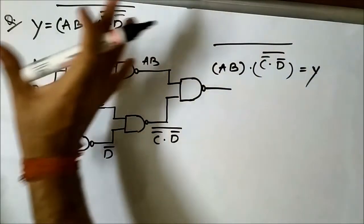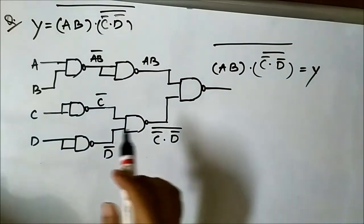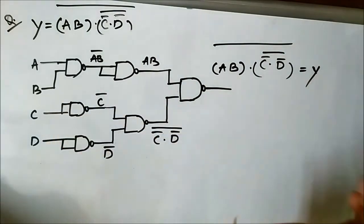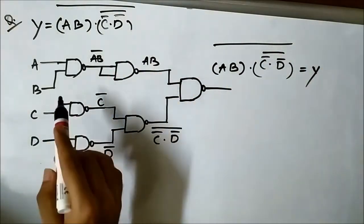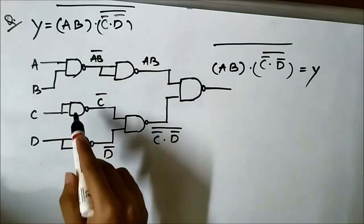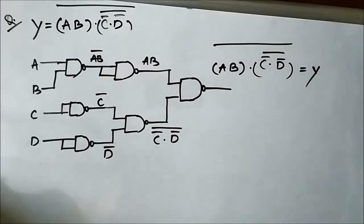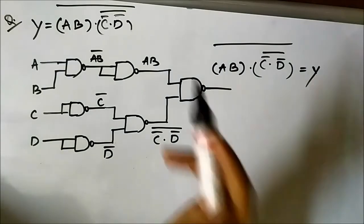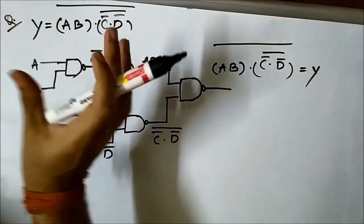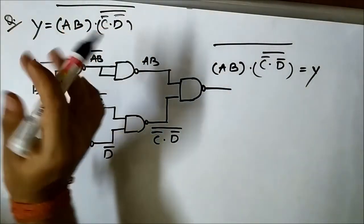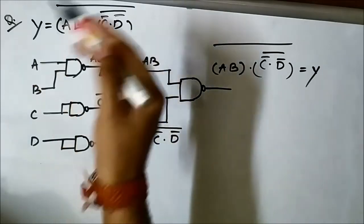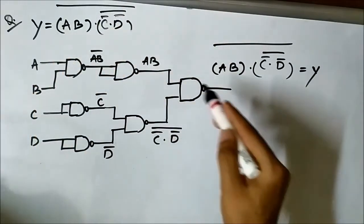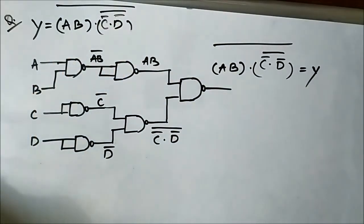We have implemented this modified Boolean expression using only NAND gates and the number of NAND gates required were 1, 2, 3, 4, 5, 6 — six NAND gates. Because of this modified Boolean expression in which all the variables were in AND form and in complement form, we could implement it using NAND gates.